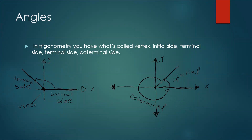This is the initial side, and you see that this arc length is called your theta. So this is the initial side, terminal side, and then this little dot here — that's your starting point, called your vertex.